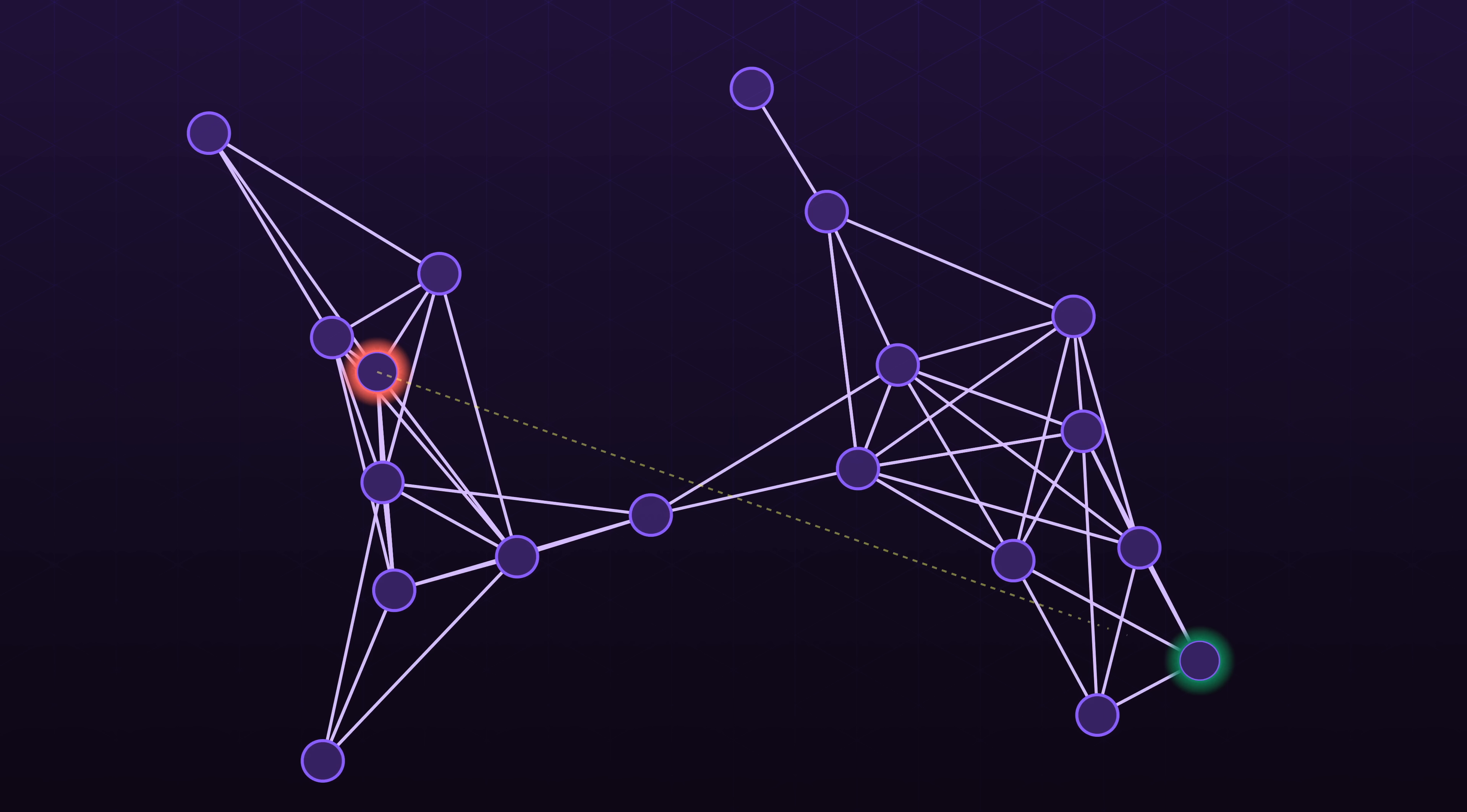What we might do is assign every node in the graph an estimate of how close it is to our final goal. We can do this by just computing the straight line distance between each node and the goal state. Then we can pick the node that gets us closest to our destination until we reach it.